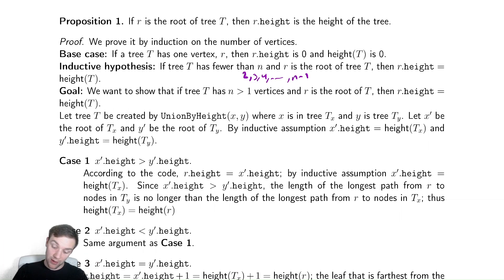Now let's start playing around with the variables and see what happens. We're going to let t be a tree that was created by this union by height. In order for that to have happened, it needs to have combined a tree tx and ty, which are necessarily going to have fewer than n vertices. So we can use our inductive hypothesis on these two trees. So x prime dot height and y prime dot height must be the heights of those trees.